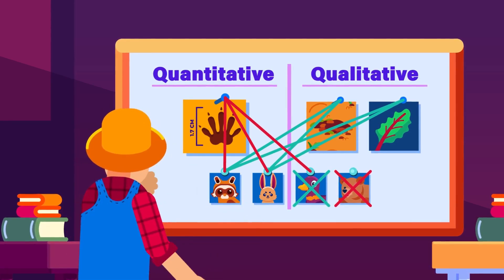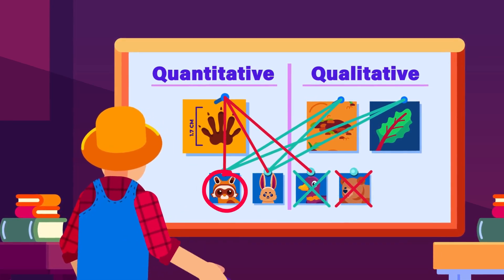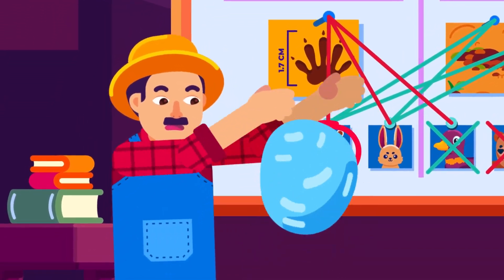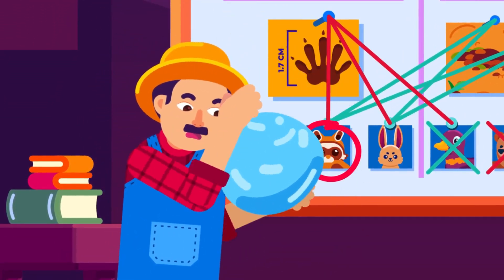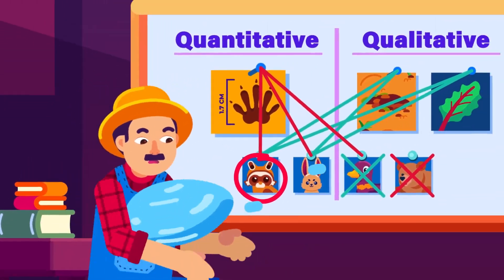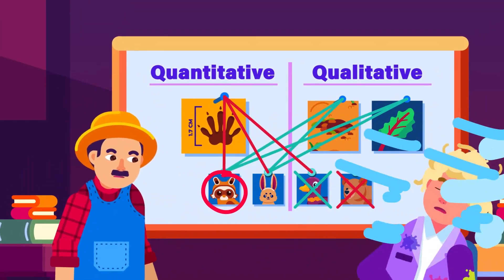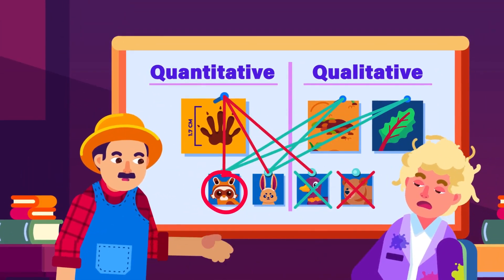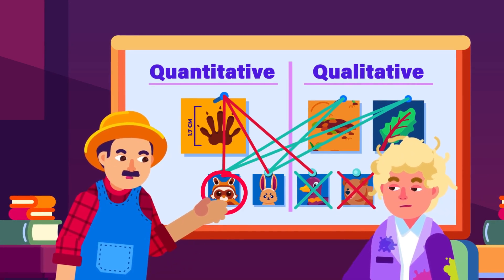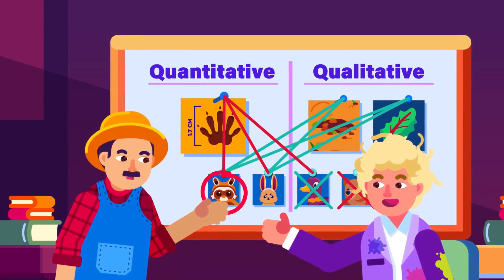If the results match, you can conclude that raccoons are the garden attackers. However, your task is yet to be completed without showing your findings to others to see if they're able to prevent similar damage the same way or even better.